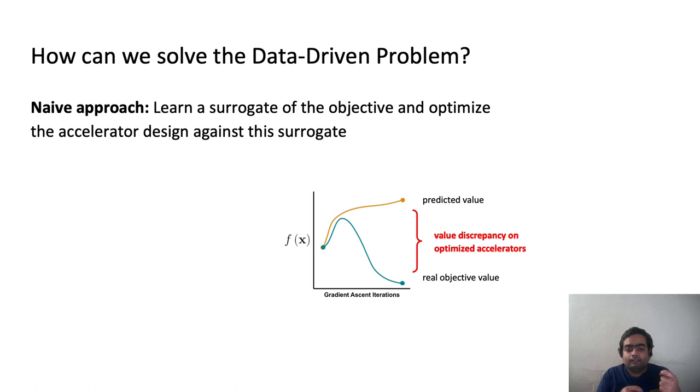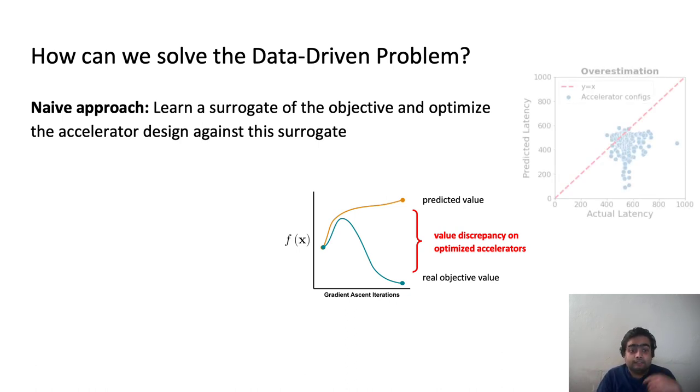So basically, what will happen is that the optimizer would think that under the learned model, a particular accelerator design is very promising. For example, it attains low latency, but it actually isn't attaining low latency under the actual simulator. So this is happening because your learned model is inaccurate on certain points, and your optimizer gets fooled into finding exactly these points on which your learned model is inaccurate.